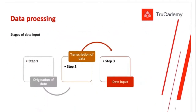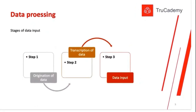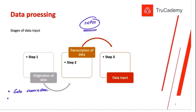Next, the stages of data input. First is origination of data — we have to wait until data is originated. For example, at a counter when we perform a sale transaction, that is the origination of data. The data has been produced. Similarly, when we perform a purchase transaction, that is also origination of data. The second step is transcription of data — whatever transaction we performed, we need to record it.